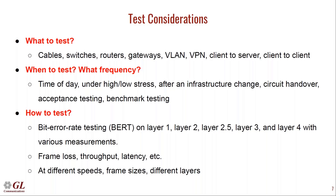And finally, how to test. There's a lot of different tests you can do. Probably the simplest is bit error rate testing at layer 1 through layer 4. You can also test for frame loss, throughput, and latency. All of these tests can be done with different parameters — different speeds, different frame sizes, different layers of the OSI model. There's a huge scope to Ethernet and IP testing. As we start talking about PacketCheck, you'll see why it can cover a diverse range of test cases.